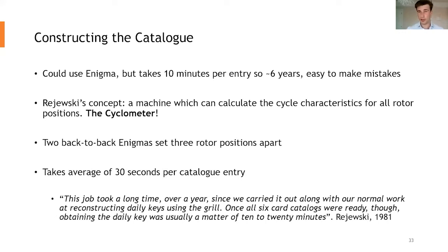One could use an Enigma machine. The Polish had what was called Enigma doubles, and essentially Enigma replicas. It takes about 10 minutes of entry, and it's very easy to make mistakes in it, that sort of thing. So what Rejewski and his colleagues came up with was a machine that could calculate these characteristics, and that is what the cyclometer is.